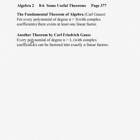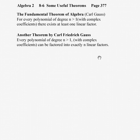Expanding upon that with another theorem by Karl Gauss: every polynomial where the degree is larger than 1, even if it has complex roots, we can find exactly n linear factors — the same number of factors as the degree of the polynomial. So x to the fifth has five factors.